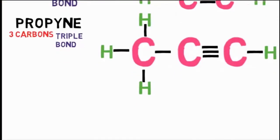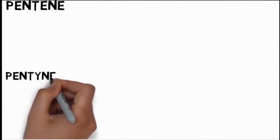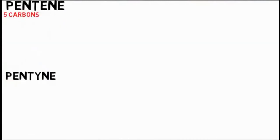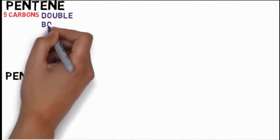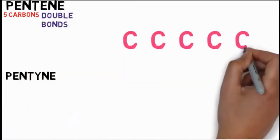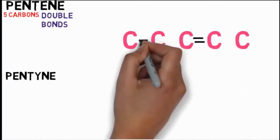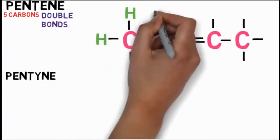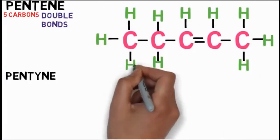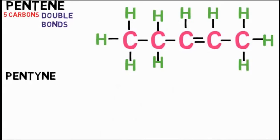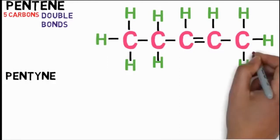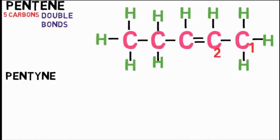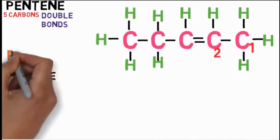For higher numbers of carbons, an extra step is needed. For example, pentene: prefix 'pent' means five carbons and 'ene' means carbon-carbon double bond on any pair. Insert single bonds between each remaining carbon pair, then add 4 bonds to each carbon and add hydrogen. While naming, you must specify the position of the double bond — in this case it is 2 from the right and 3 from the left, so it is pent-2-ene.